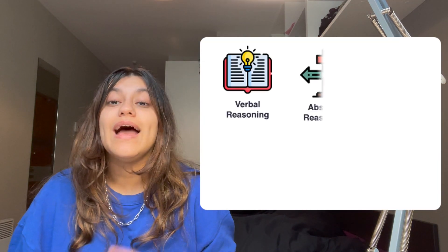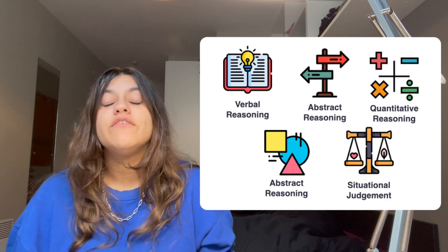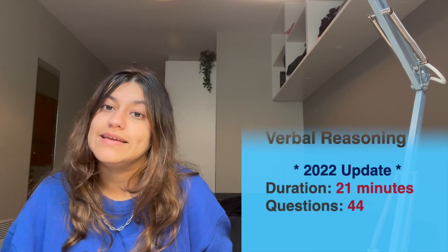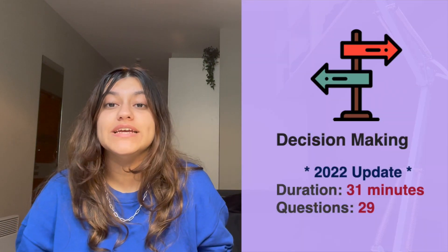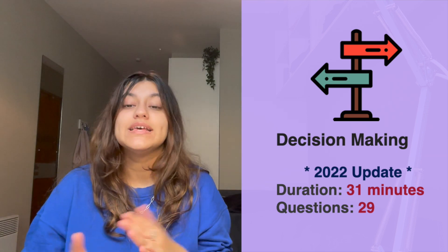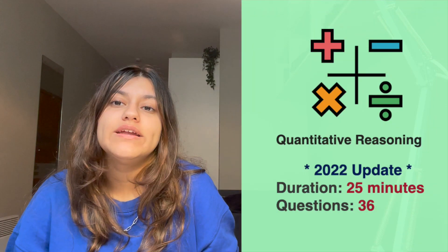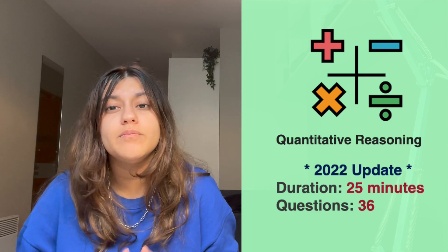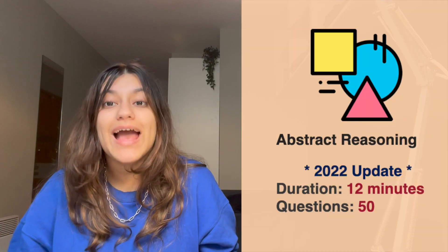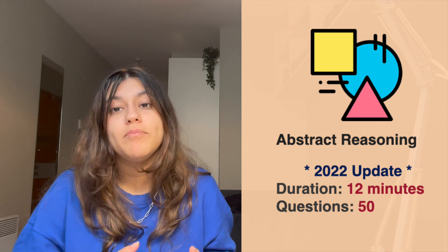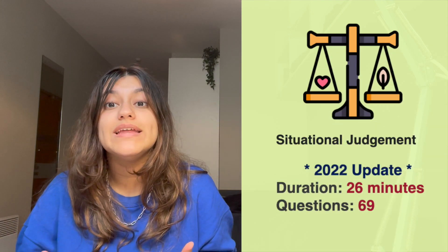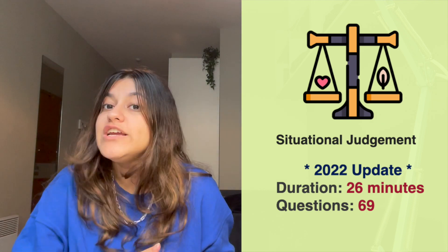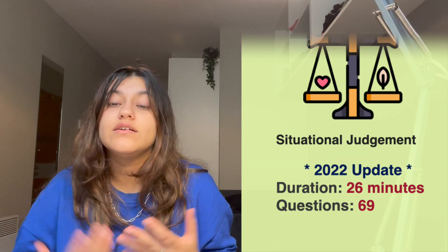There are five sections to the UCAT exam. The first is verbal reasoning, which tests your comprehension skills. The second is the decision-making section, which assesses your ability to make decisions in response to both text and numerical data sets. The third is quantitative reasoning, which assesses your math skills, because calculations — especially regarding dosages — are a key component of being a junior doctor. The fourth is abstract reasoning, which assesses your ability to spot patterns and ignore irrelevant information. And the last is the situational judgment section, which assesses your professionalism, behavior, and the decisions you would make in ethical scenarios.